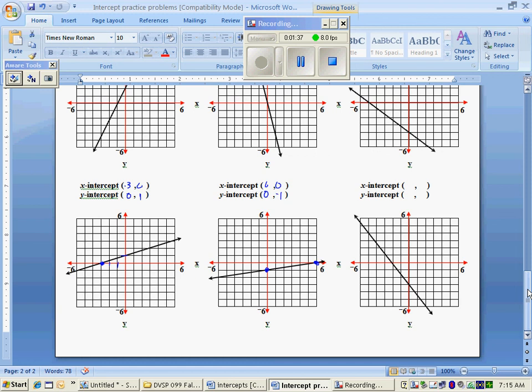And the last problem, x-intercept is negative 2, 0. Y-intercept is 0, negative 3. Be sure to keep track of the directions if the number is positive or negative.